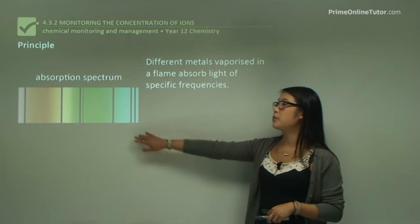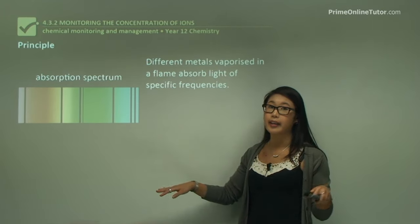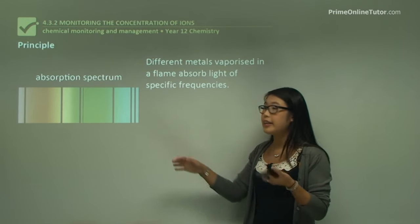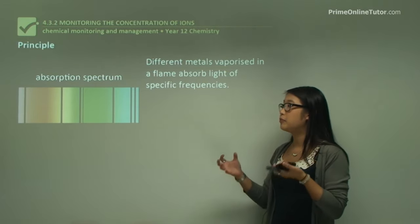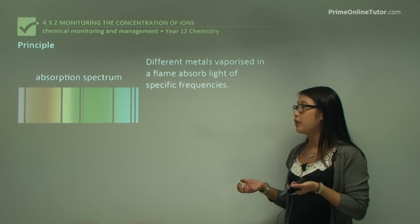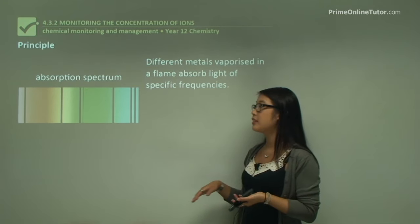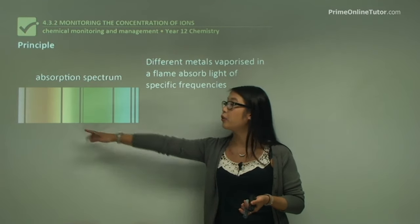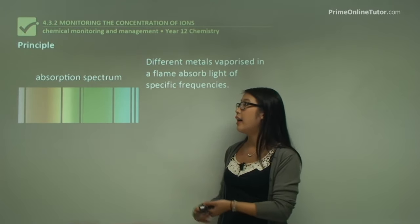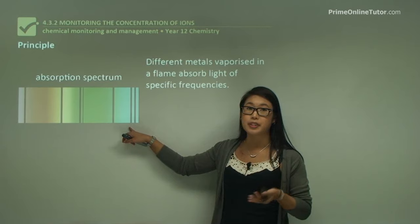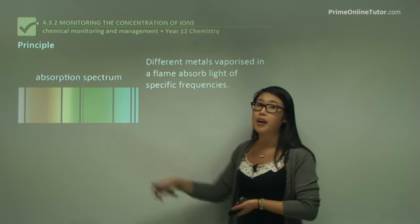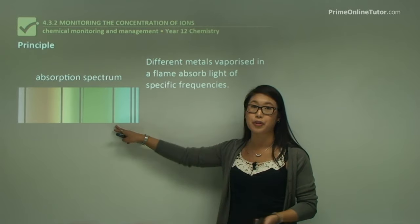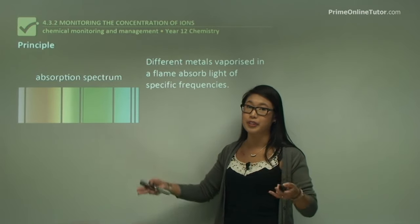What's important is that each metal ion will absorb specific frequencies. In an absorption spectrum, which is white light containing all frequencies, each ion will absorb specific frequencies shown as black lines. This is specific for the ion we're looking for. If we look at another ion, it will have different spots where the absorption is occurring.